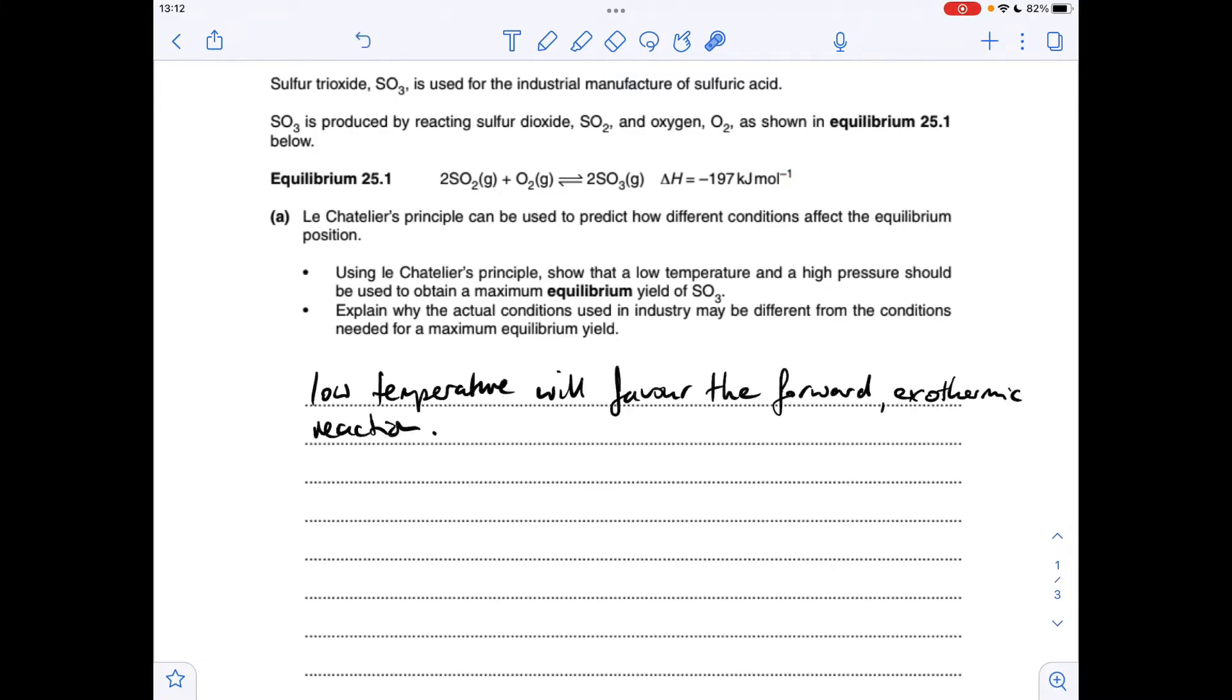Moving on to pressure, why would a high pressure favour the forward reaction? It's because we've got fewer moles of gas on the right. So only two moles on the right, but we've got three on the left.